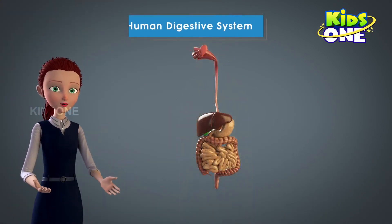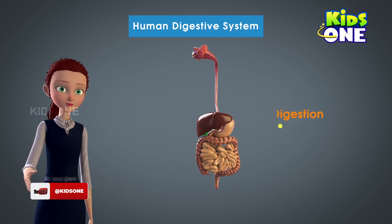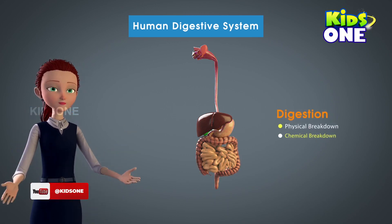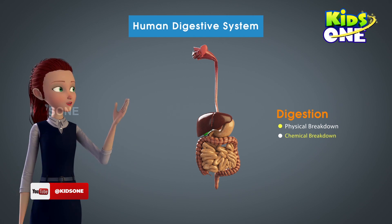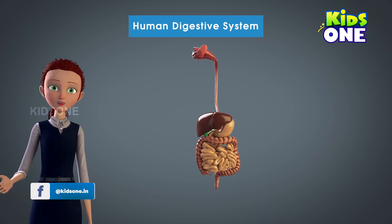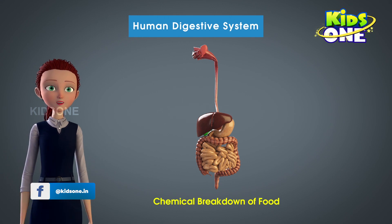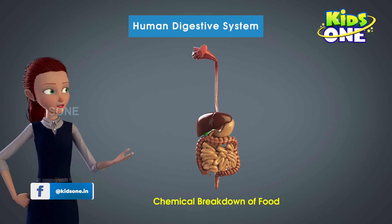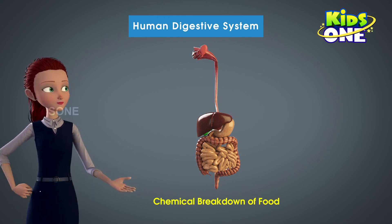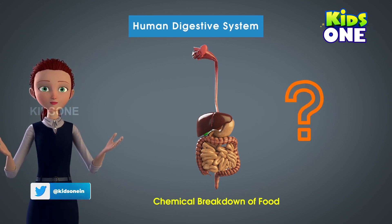The digestive system is one of the finest systems in the human body. Digestion refers to the process of converting complex food substances into their simpler and absorbable forms. But this process is incomplete without the chemical breakdown of the food, and that is a very important process. Which part of the body helps in this process?